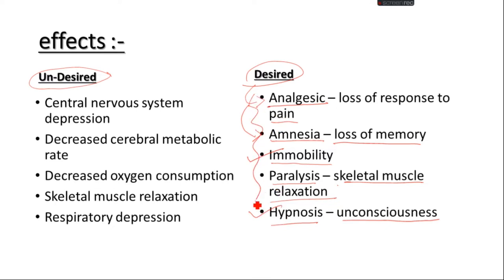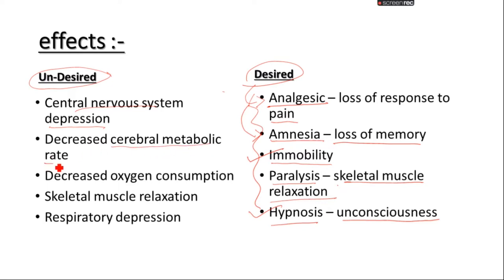On the other hand, along with the desired effects, most of the time we also get undesired effects. The central nervous system (CNS) becomes depressed. The cerebral metabolic rate — the functioning of the brain — also decreases significantly. Oxygen consumption decreases greatly, and therefore we may have to put the animal on a ventilator as well.